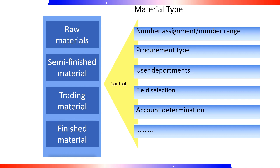The material type and plant together determine how a material is maintained in inventory management, including whether quantity changes are updated in the material master record, value changes in the stock accounts of financial accounting, or both. The material type is a key factor in the automatic account determination process, which determines which accounts are updated when a receipt or issue is posted. The standard SAP system provides a variety of material types, but companies can also define additional material types in customizing to meet their specific needs.